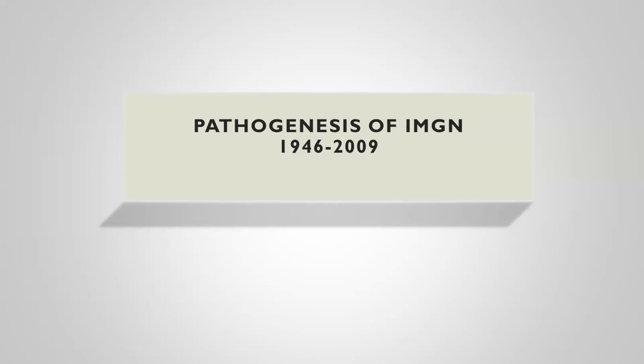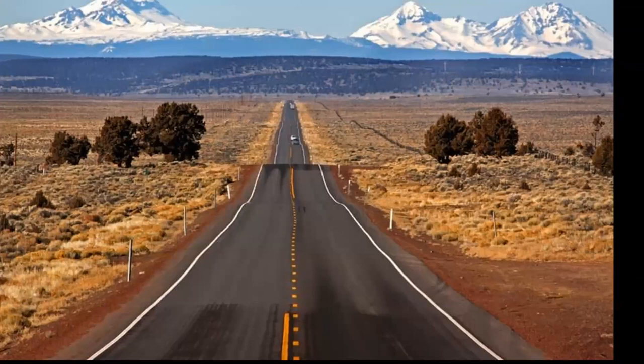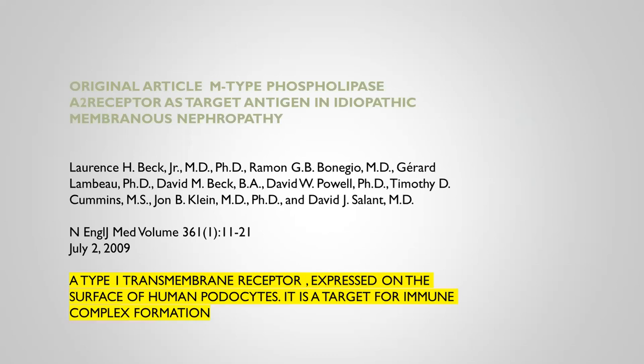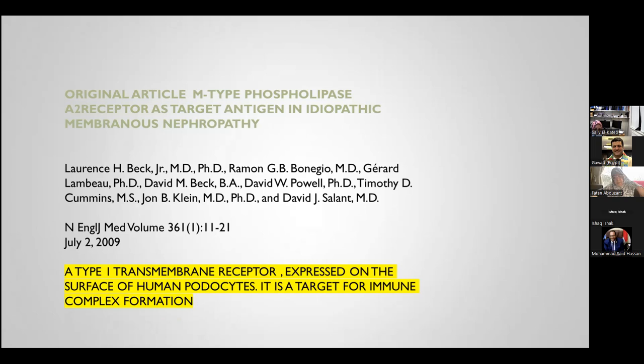We've come a long way with understanding the pathogenesis of this GN — it started in 1946 and we learned much more in 2009. That was when the M-type phospholipase A2 receptor (PLA2R) was discovered as an antigen on the podocyte. Its expression on podocytes makes it a target for anti-PLA2R antibodies, which attack the basement membrane. We still don't know why this occurs in certain patients and not others.